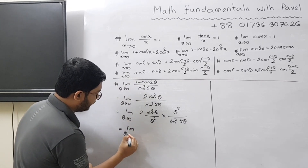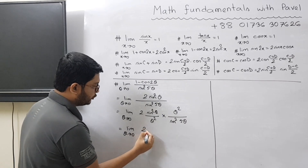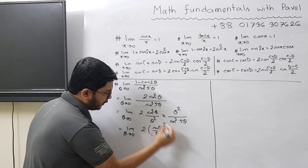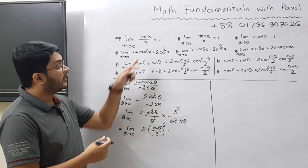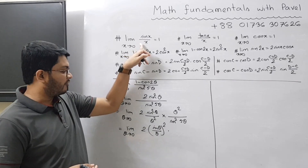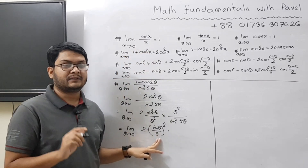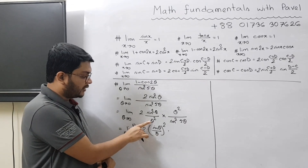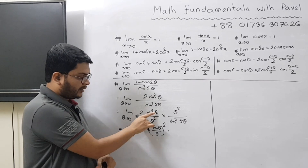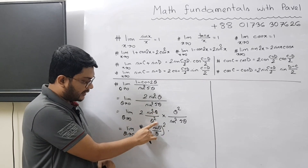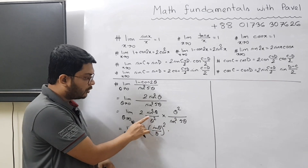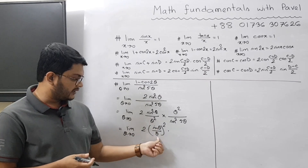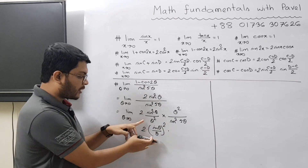So we can write: limit theta tends to 0, 2 times sin theta by theta, whole square. According to the standard formula, the value of sin theta by theta as theta tends to 0 is equal to 1. That was the reason why we converted and adjusted it with theta square — because we need a theta square so we can write sin theta by theta, whole square. We know that sin square theta equals sin theta whole square, and theta square equals theta whole square.